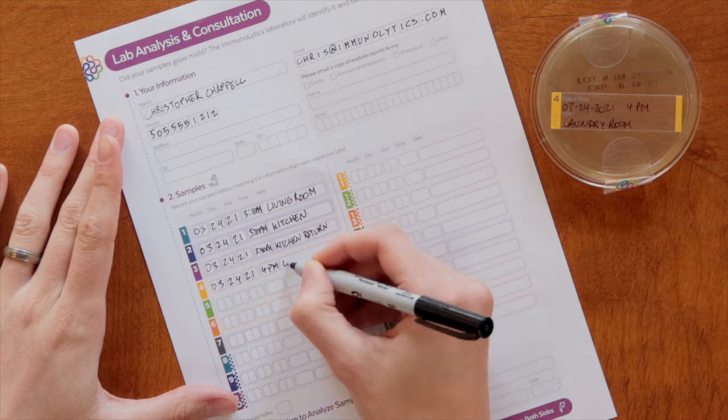For each visible mold sample taken with a swab, apply a label to an area of the container where it's most visible. Each sample label is numbered, so do your best to keep the sample labels in sequence without skipping numbers. After you're done closing and labeling the samples, record your samples on the lab analysis form, matching the information from each respective color matched label.